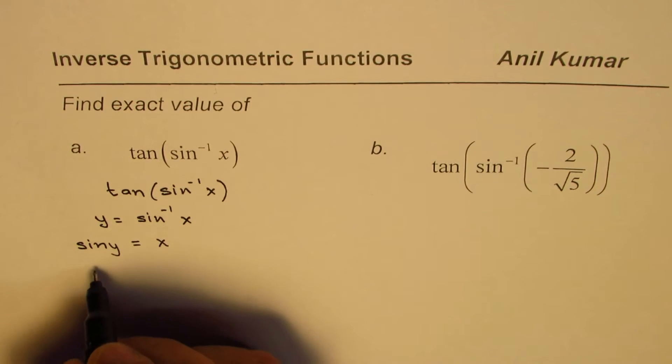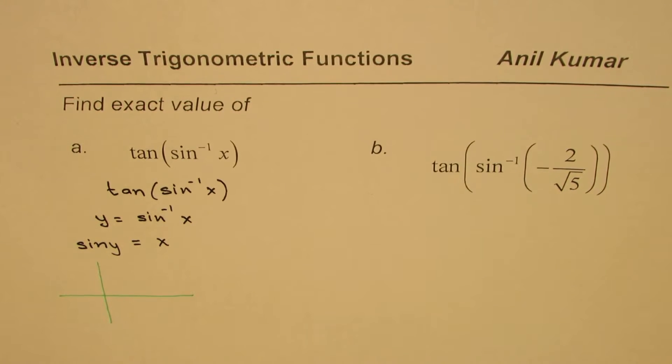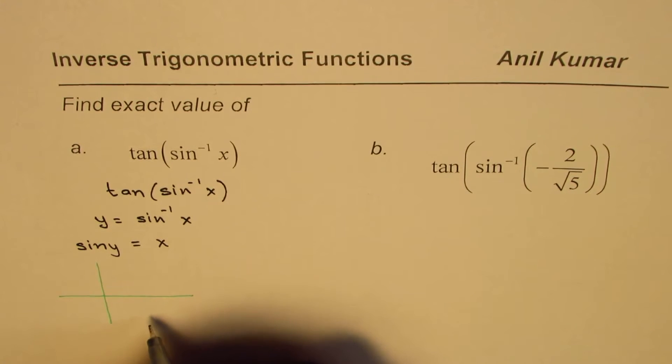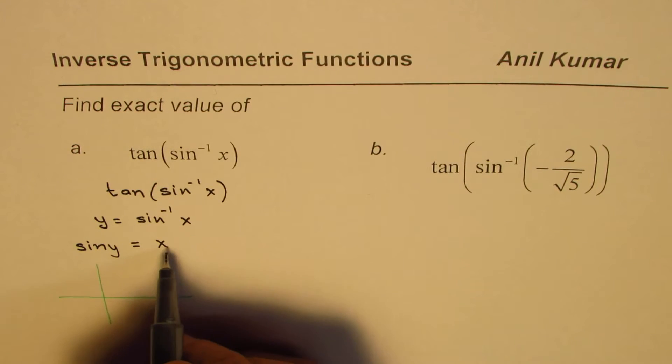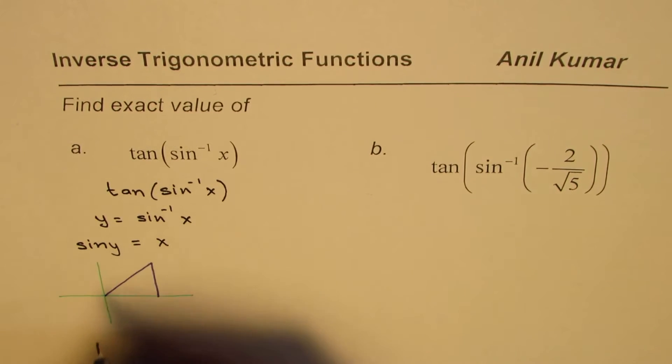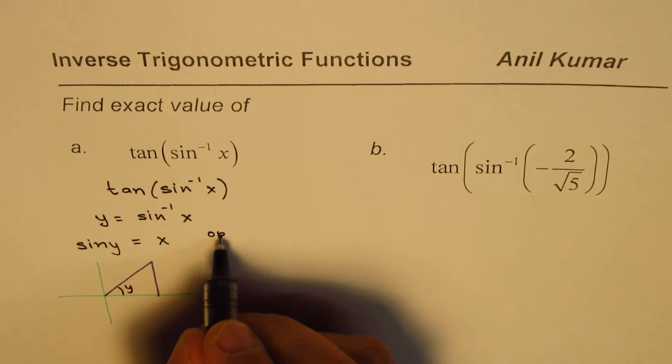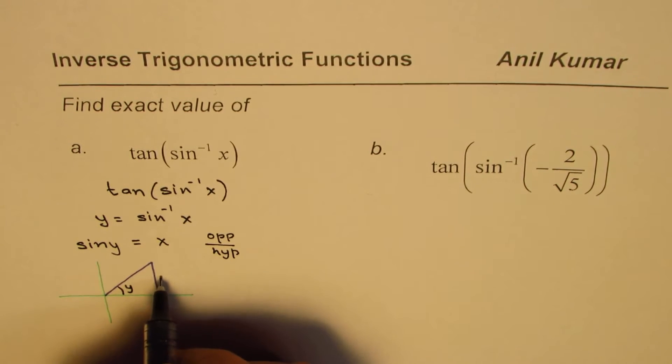Let me sketch one here. I am sketching a triangle with positive value; it could be applied with the negative value also. When we say y is sine inverse of x, sine y is x. So in that case sine y equals x really means that if this angle is y, sine is the ratio of opposite over hypotenuse.